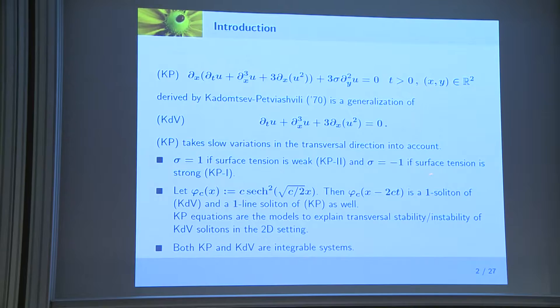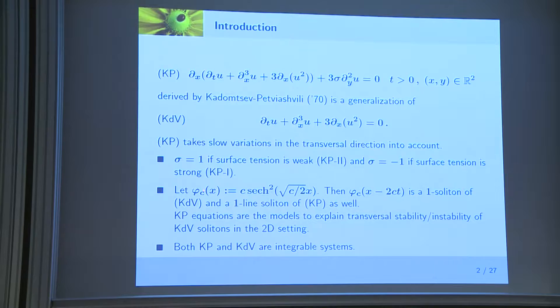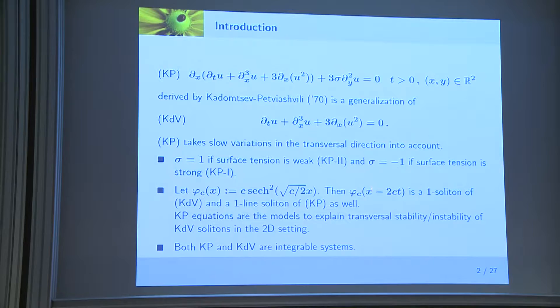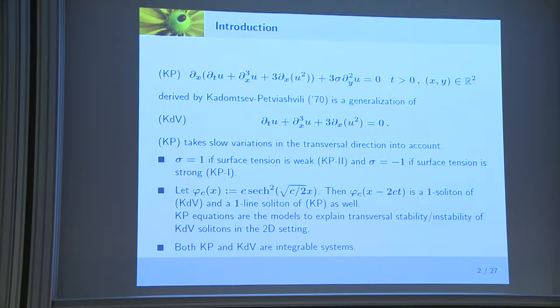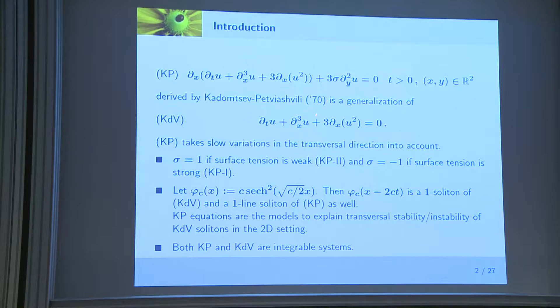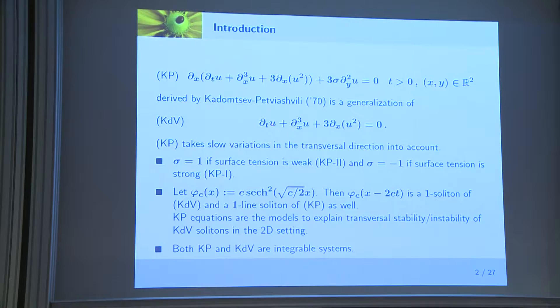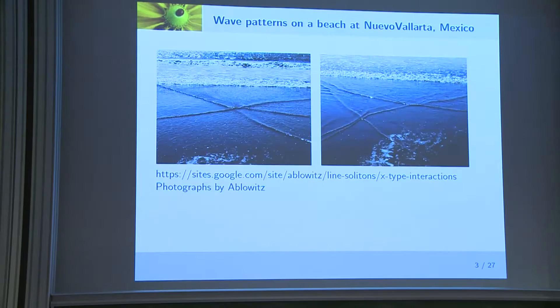If sigma equals minus one, it is called the KP1 equation, in which case the surface tension is assumed to be strong. Let phi sub c be a certain function; then phi sub c of x minus 2c times t is a one-soliton solution of the KDV equation. The KP equation is a model to explain the transversal stability or instability of KDV in the 2D setting. The equation was derived by Kadomtsev and Petviashvili in 1970, and they also did some formal stability analysis of line solitons. Both KDV and KP equations are known to be integrable systems.